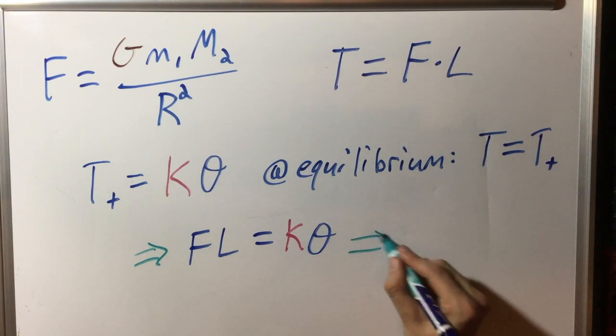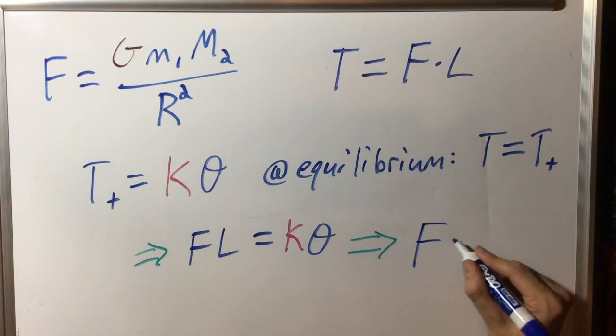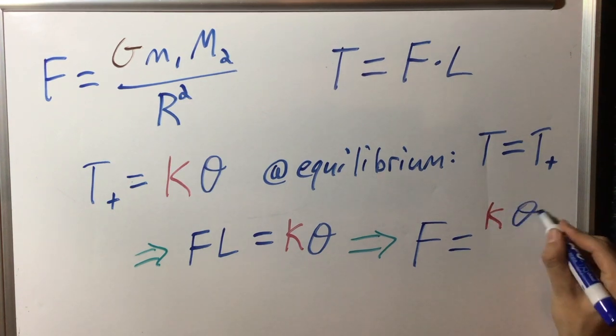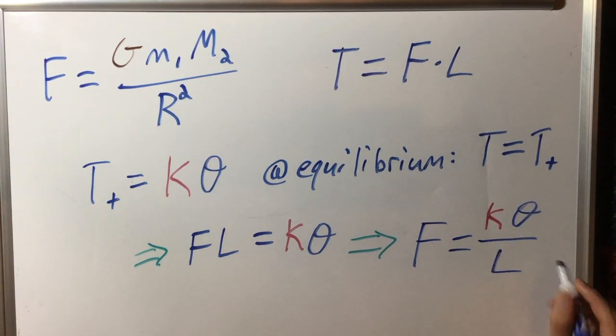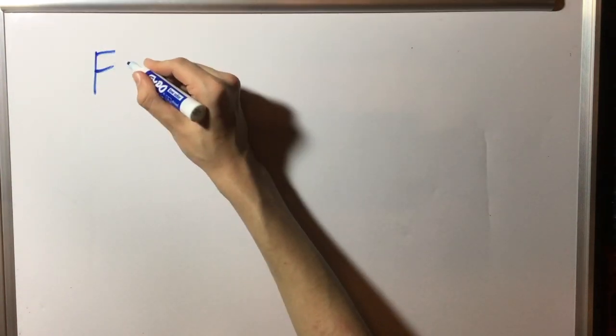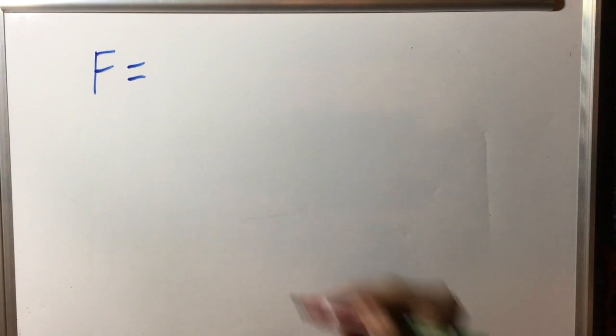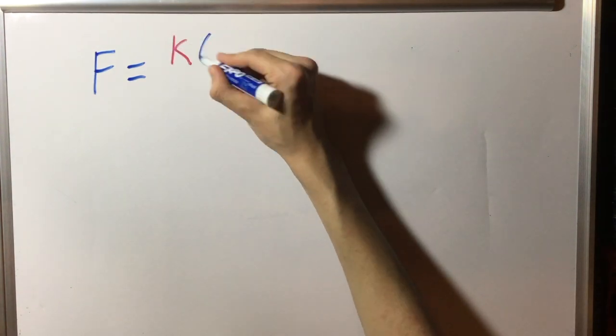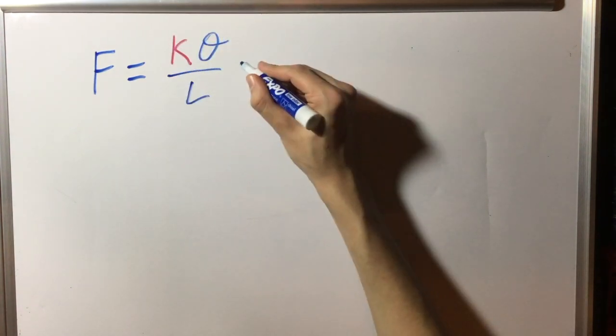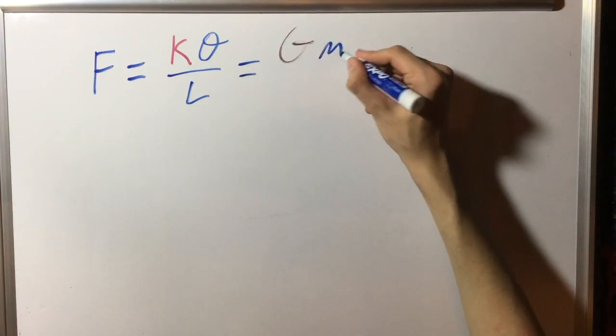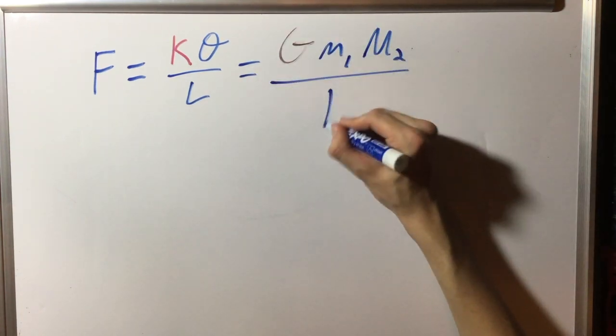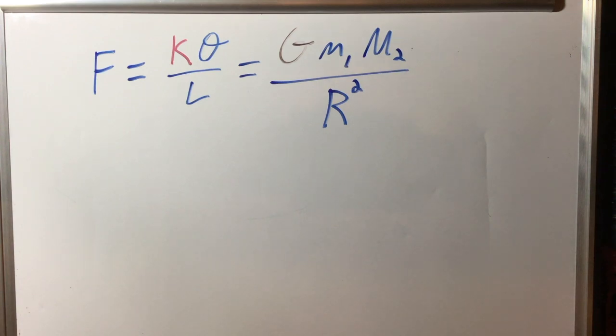Therefore, we see that tau is equal to FL is equal to kappa theta is equal to tau T. From this, we can set F is equal to kappa theta over L. Now, substituting our newfound definition for F into the original gravitation equation, we get F is equal to kappa theta over L equals Gm1m2 over R squared. All of the values shown here can be measured, with the exception of G and kappa, which need to be calculated.